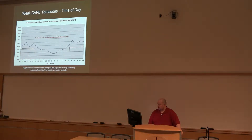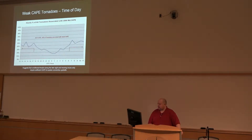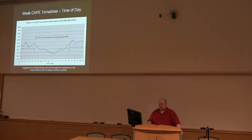Hourly percentage of all tornadoes associated with ML CAPE — one highlight stat is that from 6Z to 17Z, nearly half of tornadoes in that timeframe are associated with weak CAPE. So if you're going to have a tornado overnight, at least half the cases are not going to have CAPE more than 500 joules per kilogram.